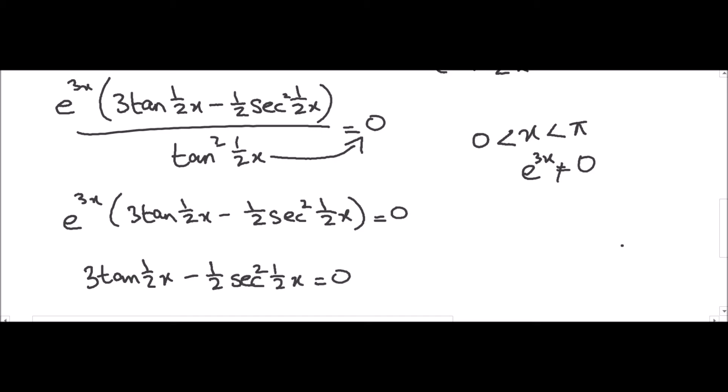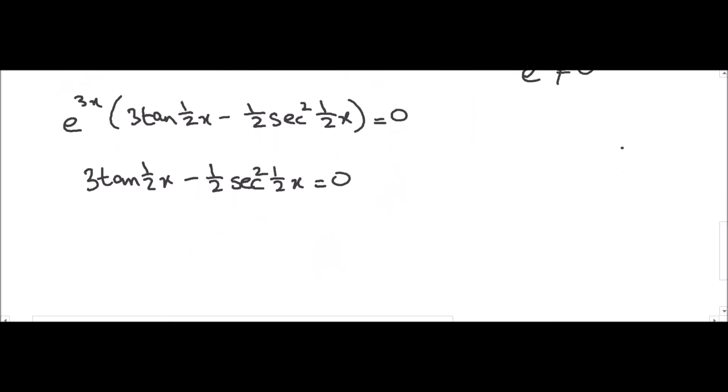We need to further simplify this. We bring ½·sec²(½x) to the right side, giving us: 3·tan(½x) equals ½·sec²(½x).